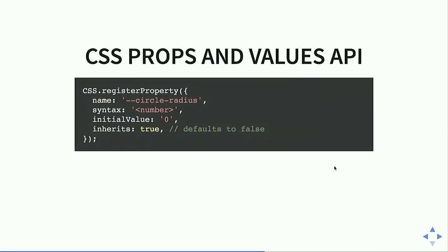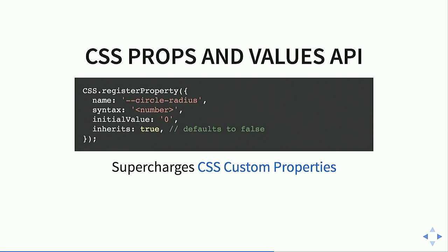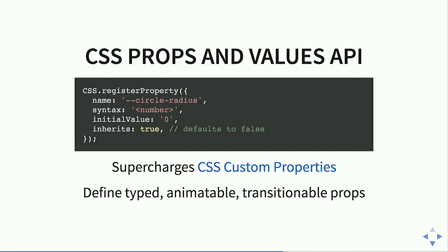The Props and Values API supercharges custom properties. You can register a property, its type — just like the typed object model — an initial value, and its inheritance behavior. None of these things can happen with custom properties right now; they're all strings internally in the browser, so you can't transition between values. This will help you define properties and their behavior, which lets you animate and transition them.